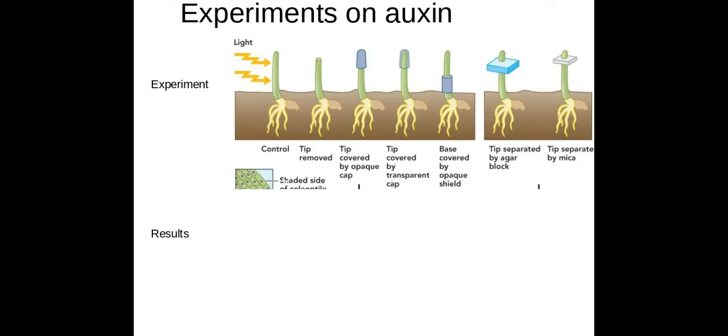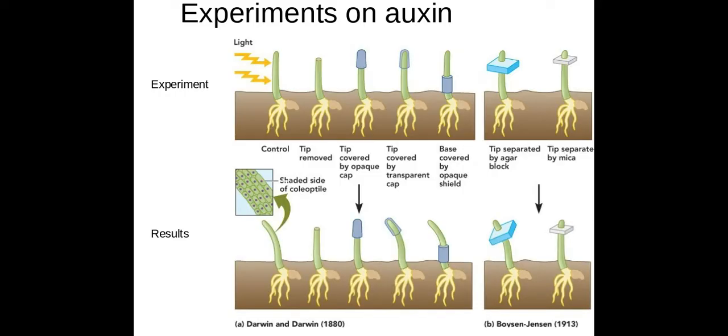There are some other experiments to do with auxin. Auxin seems to be the most popular plant hormone when discussed in the exam. As you can see in this first one it's very similar to the one we were just discussing. In the second one here, again the tip's been removed so therefore the auxin has been removed which is where it's made from in the shoot tip. If I don't have any auxin being made I'm not going to get any growth towards that light source.